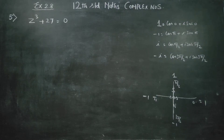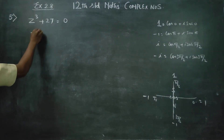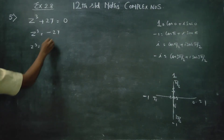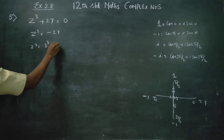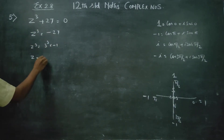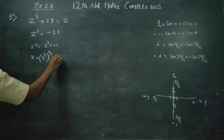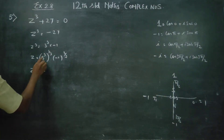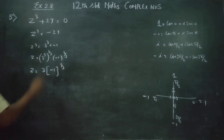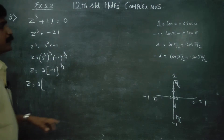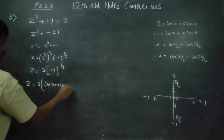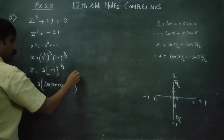Our problem is z³ plus 27 equals 0, so z³ equals minus 27. This can be written as 3³ times minus 1. Therefore z equals 3 times minus 1 to the power 1/3. Applying the ready-made polar form, minus 1 is cosπ plus i sinπ, so z equals 3 into (cosπ plus i sinπ) to the power 1/3.